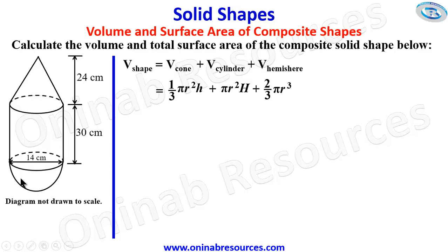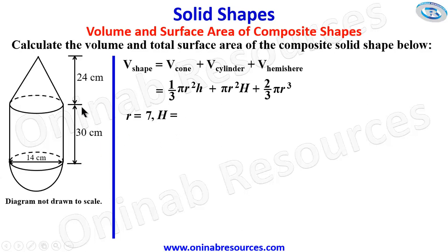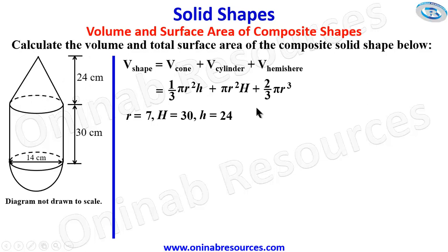Remember they share a common radius of 7 centimeters, since the diameter is 14 centimeters. The radius R is 7 cm, the height of the cylinder capital H is 30 centimeters, the vertical height of the cone small h is 24 centimeters, and π is taken as 22/7.